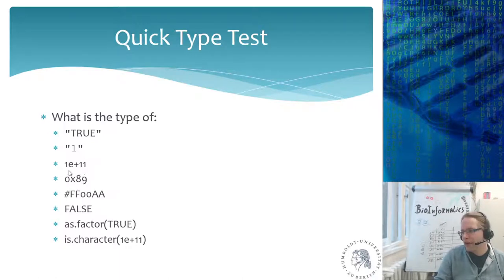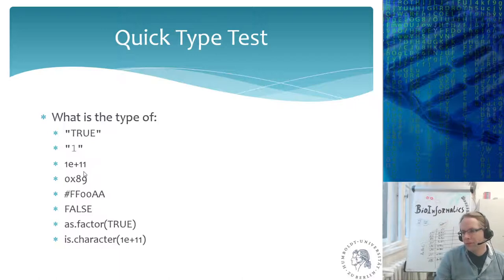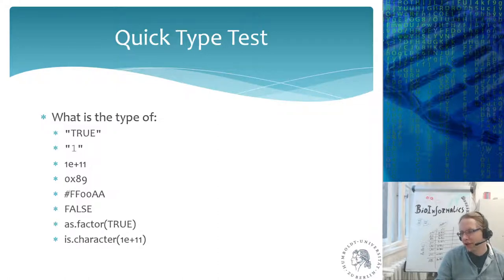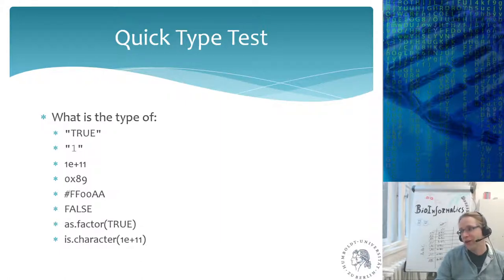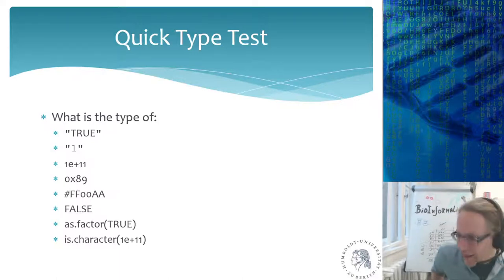The third one: 1e+11 — what is the type? A student answered 'numerical'. It is a numeric value. Note that in R the type is called 'numeric', not 'numerical' — there's no type called 'numerical' in R. Being precise about terminology matters, especially on exams.